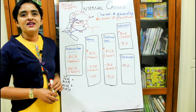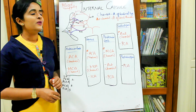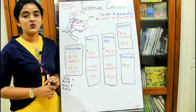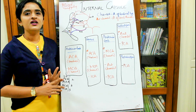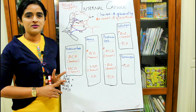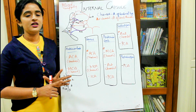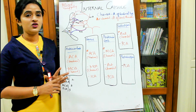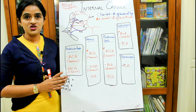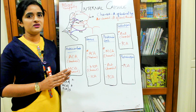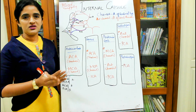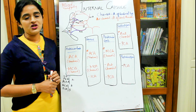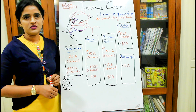Hello everyone, welcome back. In this session we will be dealing with the blood supply of the internal capsule. Before viewing this session, I want you all to see the session on the introduction to the white matter of cerebrum, followed by the corpus callosum, then the sessions on internal capsule — the introduction, the motor fibers, how the sensory fibers are arranged — and then this session on the blood supply of internal capsule.